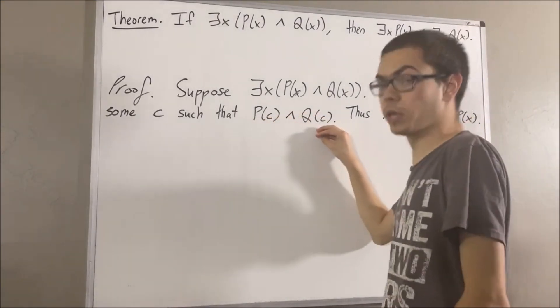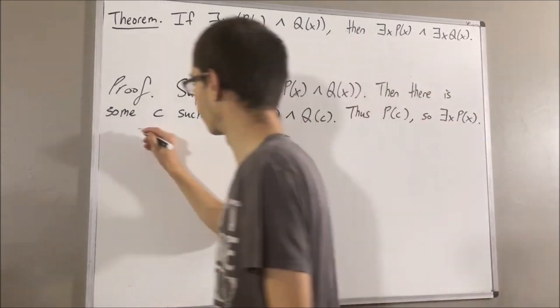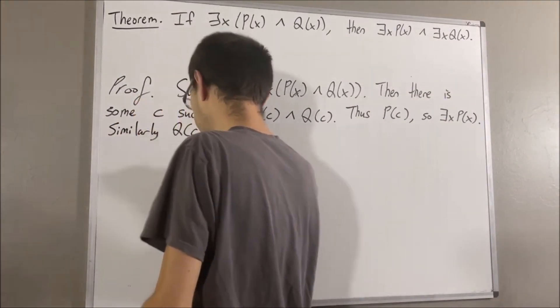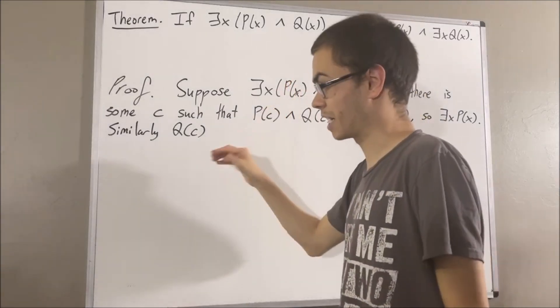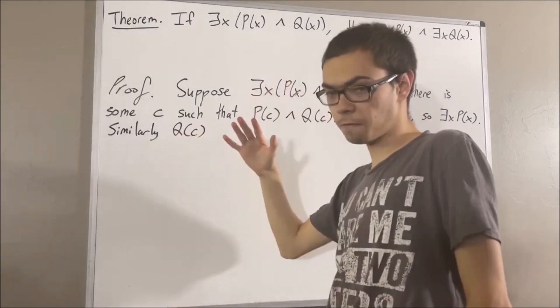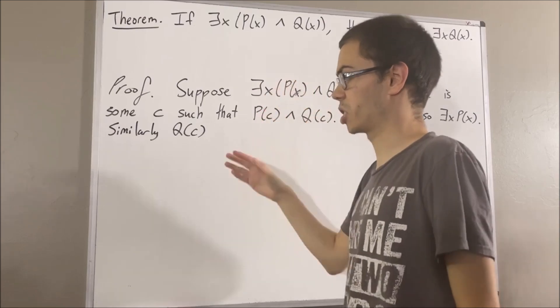Similarly, from here, we have that q of c is true. And so, we see there is at least one object out there which satisfies statement q. Therefore, there exists an x such that q of x.